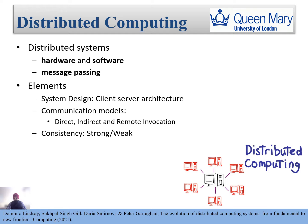What would be the possible elements for distributed computing? The first would be system design, which is basically a client-server architecture. Then there is the communication model, which includes direct, indirect, or remote invocation call models. Another element is consistency, which could be strong or weak depending on the context in which we are using it.